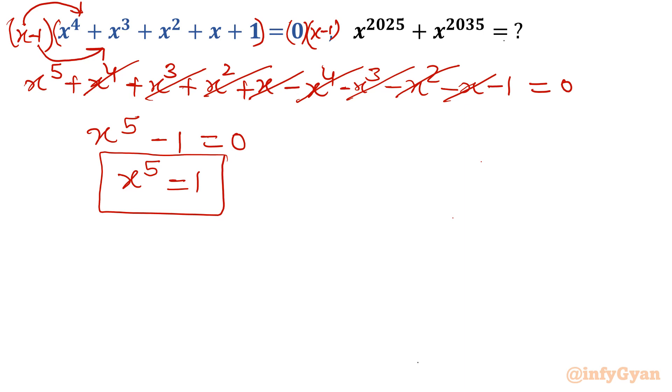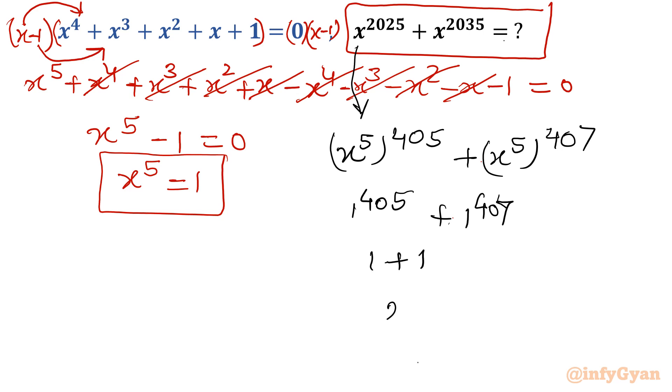Same result as we calculated in GP also. Now come to this value calculation. Simply put the value and you will get the same result. I will write this as x power 5 whole power 405 plus x power 5 whole power 407. So 1 power 405 plus 1 power 407, which is 1 plus 1 which is 2. This is our answer.